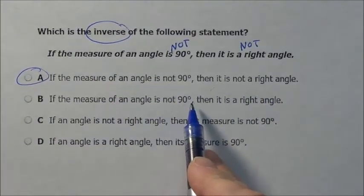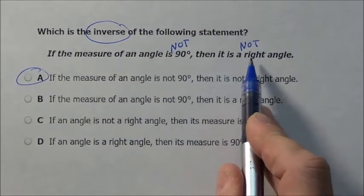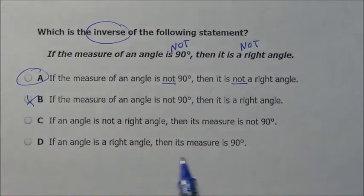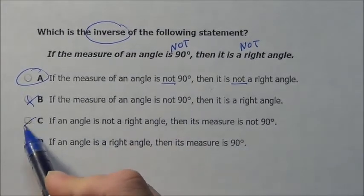If the measure of an angle is not 90, then it is a right angle. Now we want to say then it is not, which is what we have right there. So we know B, we are just double checking ourselves. The angle is not a right angle. No, it has to say not 90.